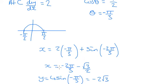So that's the pair. We've got x is minus 2π over 3 minus root 3 over 2 and y is minus 2 root 3.